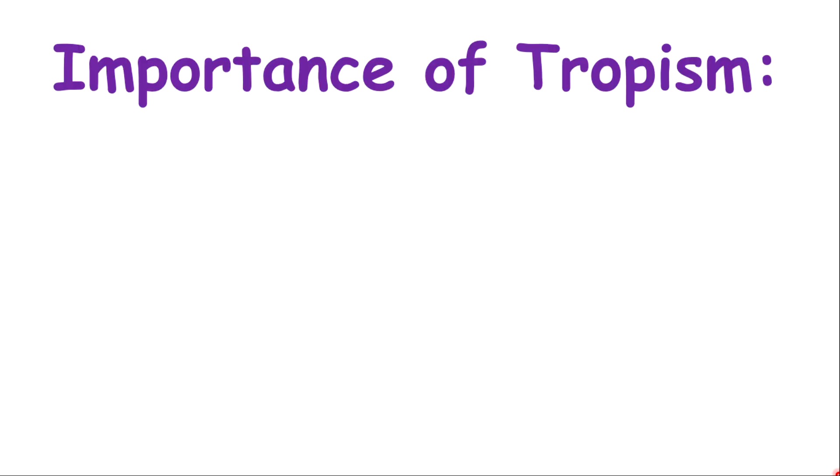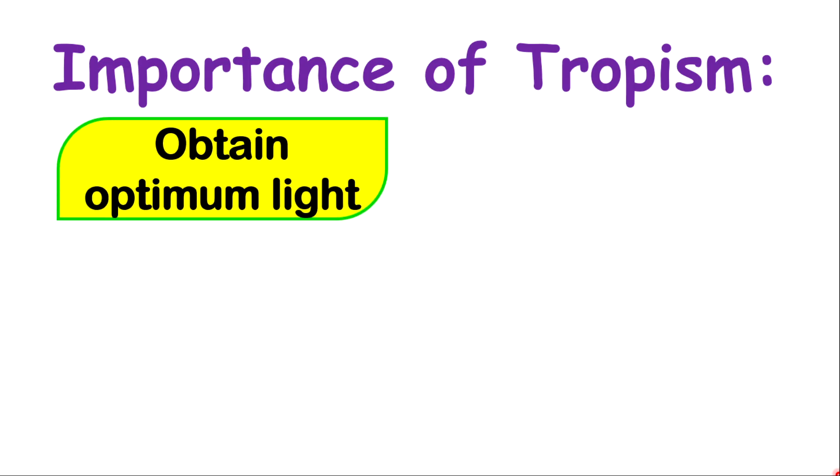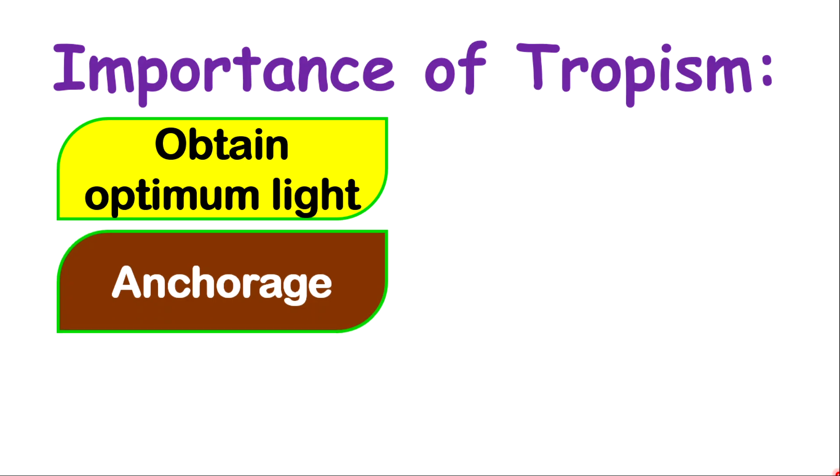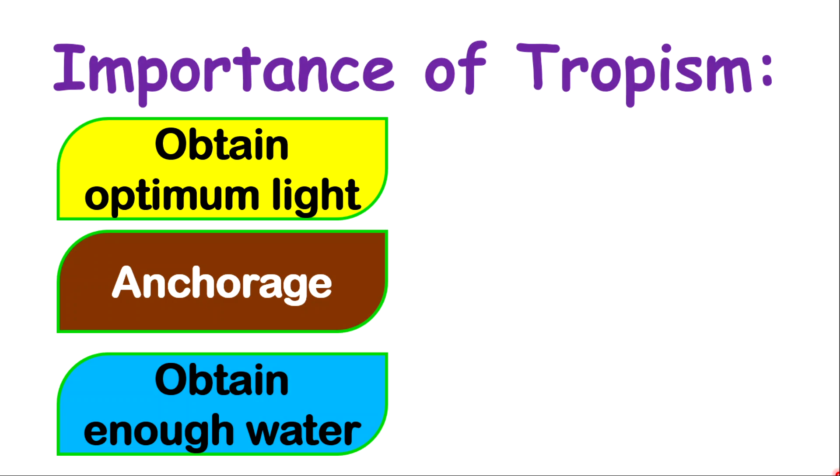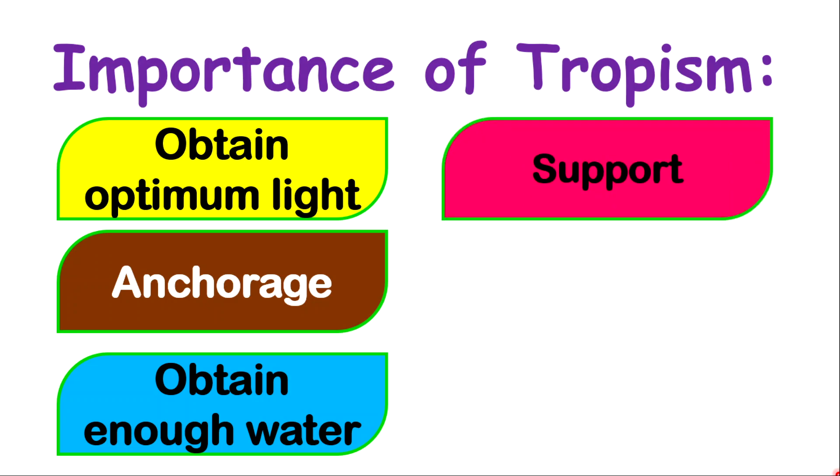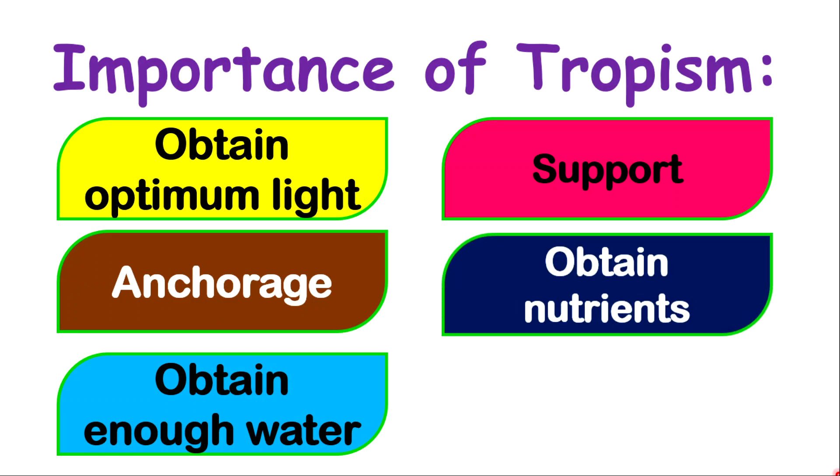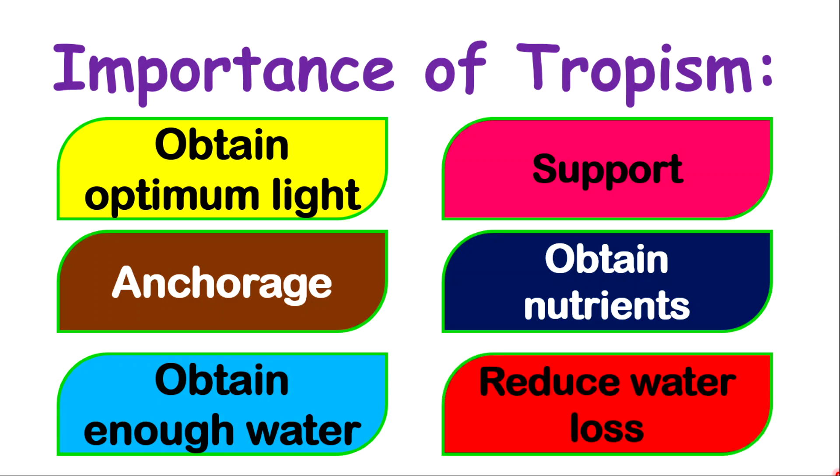Now we're going to get into some importance of tropism. You're going to see the reasons why tropism is important in plants. The importance are also based on the type of response. Definitely, plants will undergo tropic response to obtain optimal light to carry out photosynthesis, also to gain anchorage, also to obtain water for support, especially for those plants that will undergo thigmotropism. To obtain nutrients, and of course, nutrients are chemical substances. And of course, to reduce water loss. Based on the temperature, the plant will respond, whether by closing stomata, whether by curling leaves, or even causing leaves to droop and fall closer to the trunk of the plant.